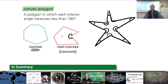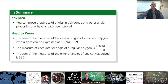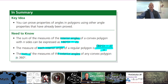Key ideas: you can prove properties of angles in polygons using other angle properties already proved. The sum of the measures of interior angles is 180 times (n minus 2). Each interior angle of a regular polygon is 180 times (n minus 2) divided by n. The sum of the measures of exterior angles in a convex polygon is 360 degrees.